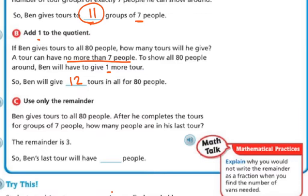So you can also use only the remainder. Ben gives tours to all 80 people. After he completes the tours for a group of seven people, how many people are going to be in his last tour? Well, we already said it. The remainder is three. So his last tour is going to have three people.